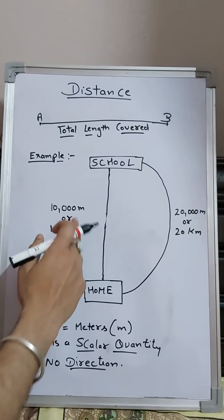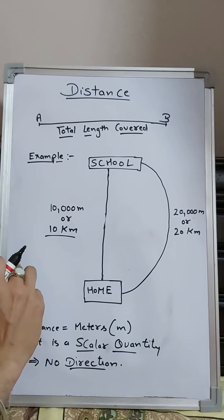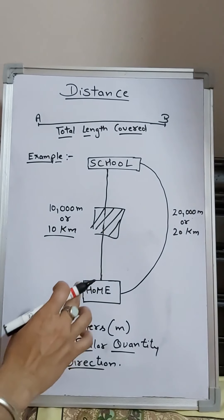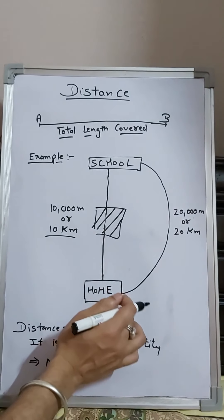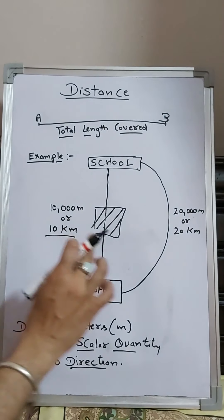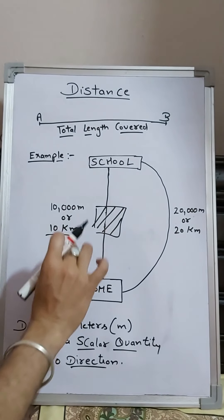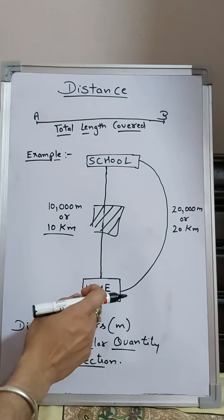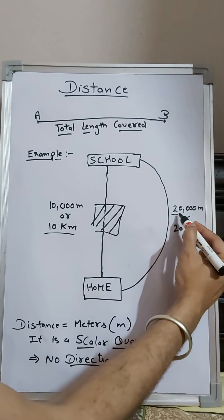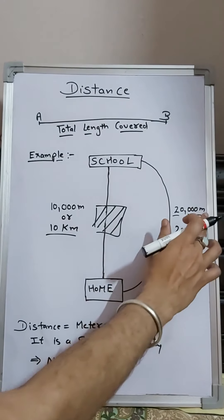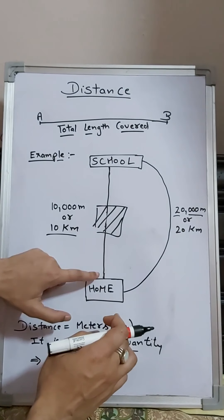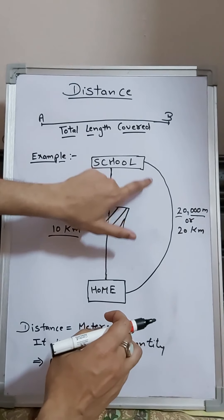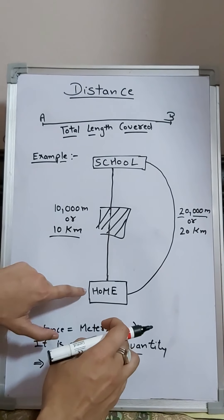The distance between home and school is 10,000 meters, or 10 kilometers. But due to some construction on the straight path, you have to take a round trip by another route. Taking the other route requires 20,000 meters, or 20 kilometers, instead of the straight 10 kilometers.